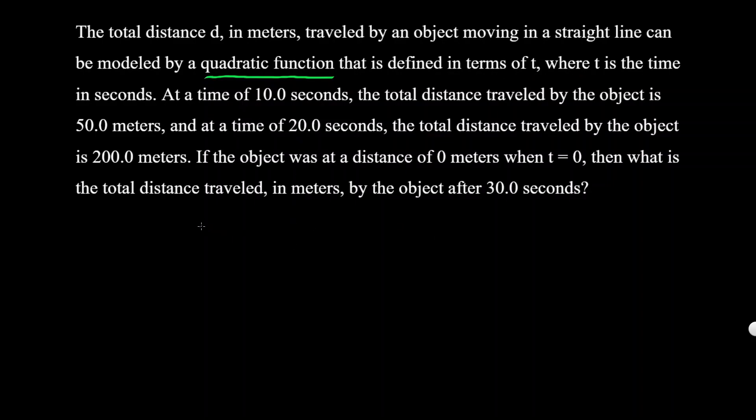If you were to graph it, the y-axis could be the total distance, and the x-axis is time in seconds. At a time of 10 seconds, the total distance is 50 meters, so we have the point (10, 50).